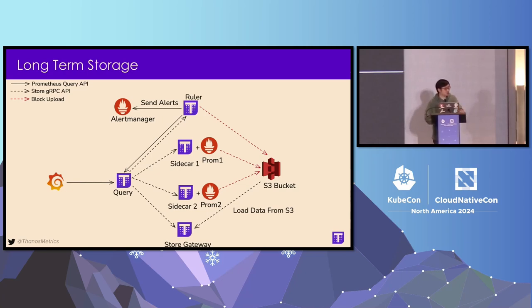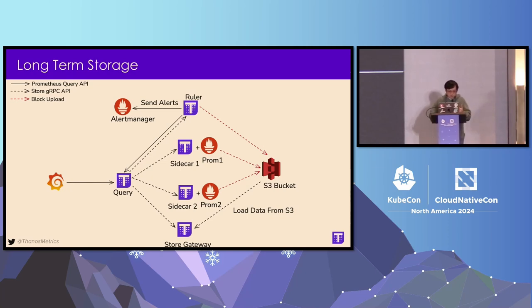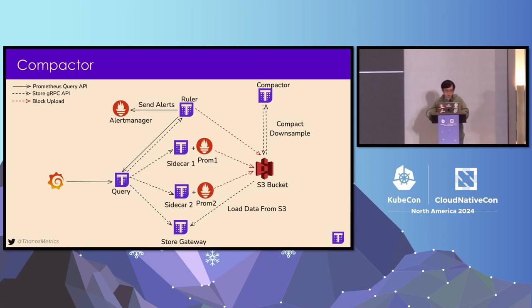In order to query all the data stored in S3, Thanos has a component called the Store Gateway. The Store Gateway is basically a proxy to serve Thanos query load from your S3 bucket, exposing the same standard Store gRPC API. But the problem is that query performance is really bad, because if you query raw every two-hour blocks that are not compacted — for example you'd have 360 blocks for a month — running a 30-day query means querying all 360 blocks, which requires a lot of I/O to your S3 bucket.